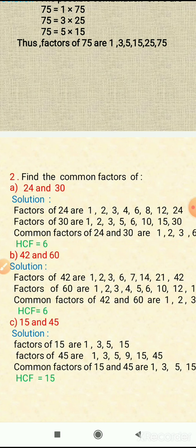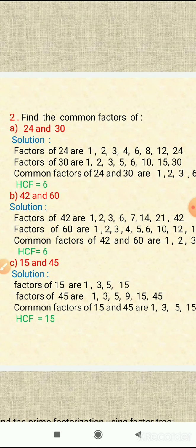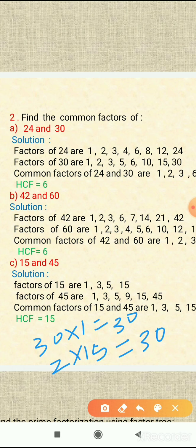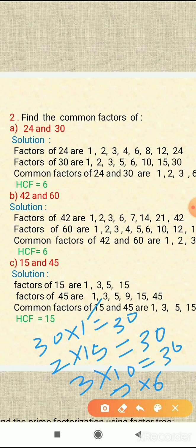Now we will see the factors of 30. The possible combinations of 30 are: 1×30, 2×15, 3×10, and 5×6. So the factors of 30 are: 1, 2, 3, 5, 6, 10, 15, and 30.